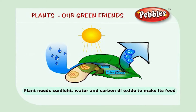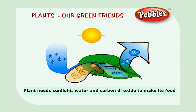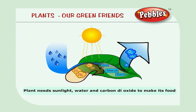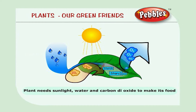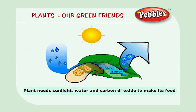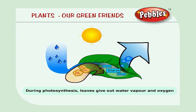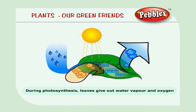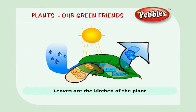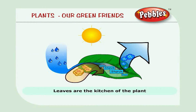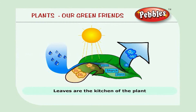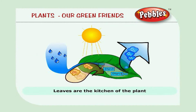The food-making process by the leaves is called photosynthesis. In the presence of sunlight, the plant puts together water from the soil and carbon dioxide from the air to make its food. During photosynthesis, the leaf gives out water vapour and oxygen. Leaves are the kitchen of the plant.